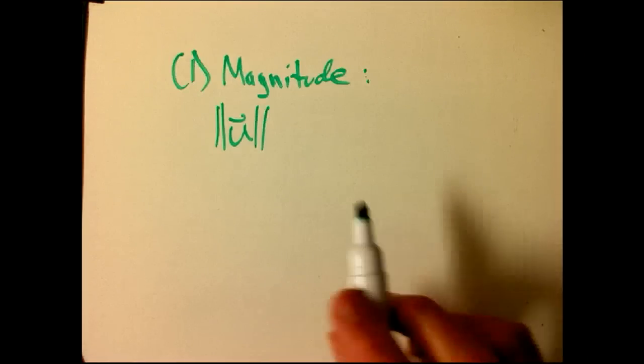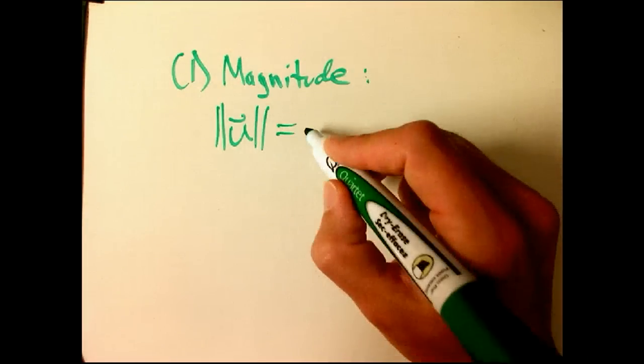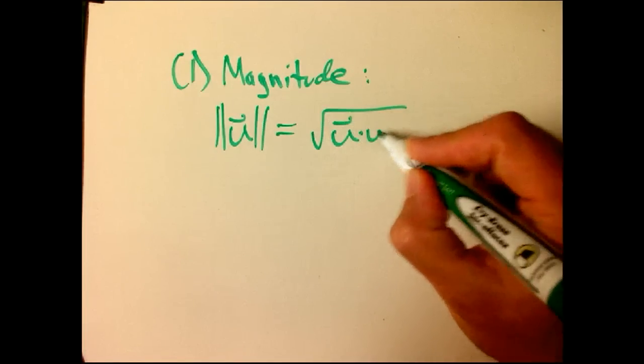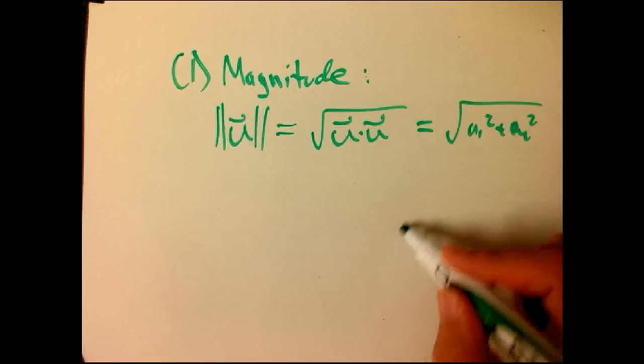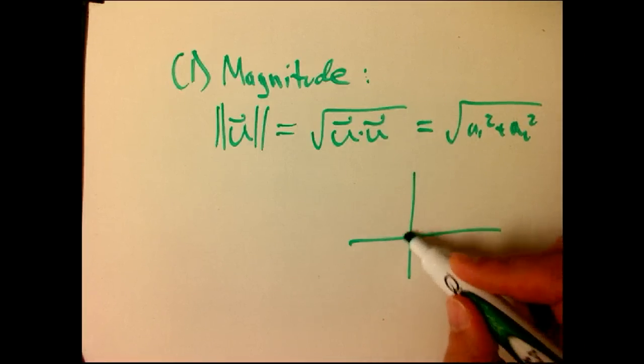Sometimes people use a single bar, but I'll use a double bar because it's more common. It's analogous to the absolute value of a number. It's a generalization of that. The magnitude of a vector is the square root of the dot product of a vector with itself. It's the square root of u1 squared plus u2 squared. Okay, so I'll draw a picture, actually. It's geometry. I should draw a picture, right?